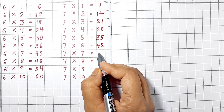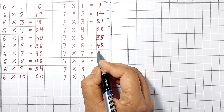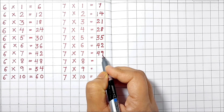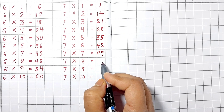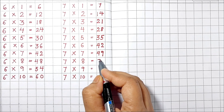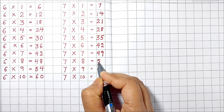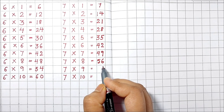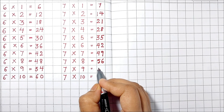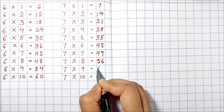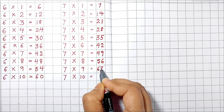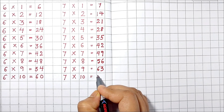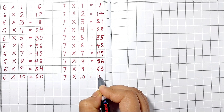7 6's are 42. 7 7's are 49. 7 8's are 56. 7 9's are 63. 7 10's are 70.